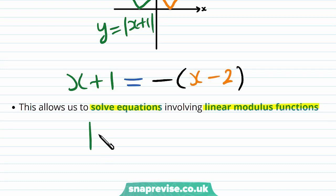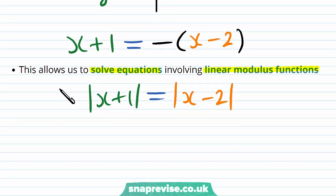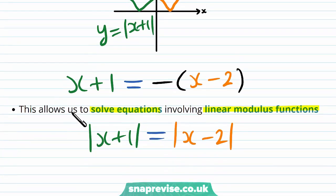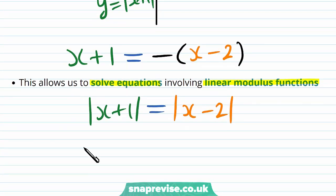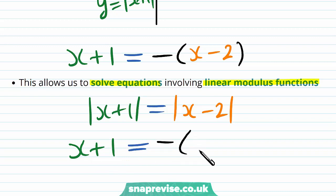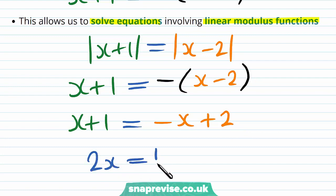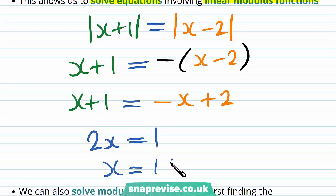If we wish to solve the equation modulus of x plus 1 equals the modulus of x minus 2, then we can see graphically that there is only one intersection point. That intersection point occurs precisely when x plus 1 equals minus x plus 2, which corresponds to 2x equals 1 and therefore x equals one half.